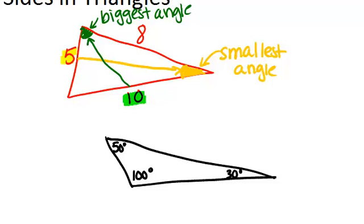The smallest side is going to be across from the smallest angle. So since the smallest angle is 30 degrees, that means the smallest side must be over here across from it. Even though we don't know the exact length, we can tell that it has to be the smallest side. The biggest side will be across from the biggest angle of 100 degrees, so the biggest side will be over here.